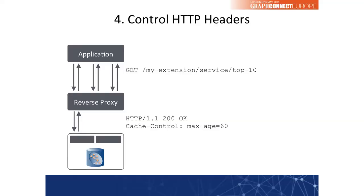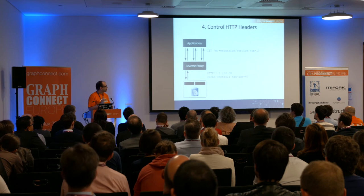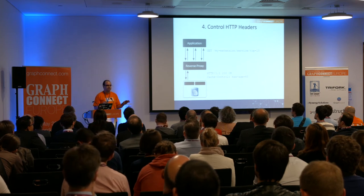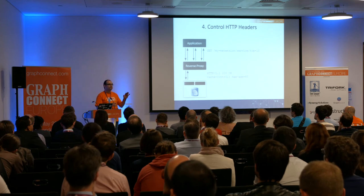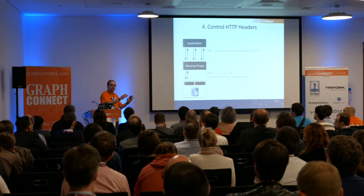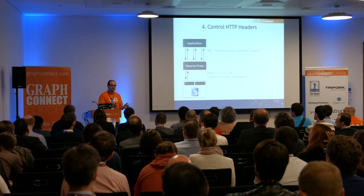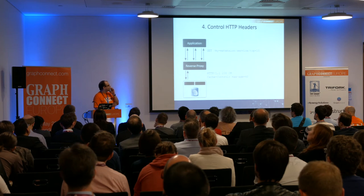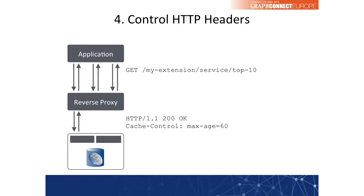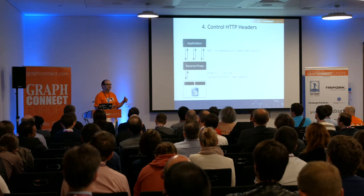One thing people typically don't pay much attention to is HTTP headers. I was once on a project where they copied an example with a POST request and then copy-pasted that for every extension they wrote — even for requests that only read data they sent POST requests. Then they wanted to benefit from caching with a reverse proxy, but reverse proxies typically only cache GET calls. You should always use HTTP headers and HTTP verbs as originally intended. Read the specs and don't just copy over examples.